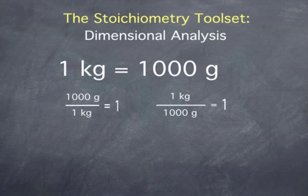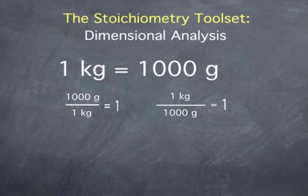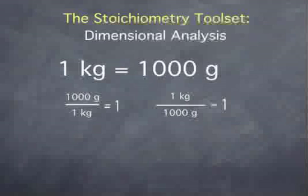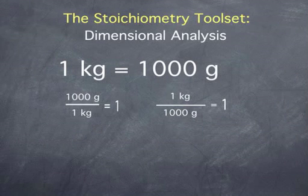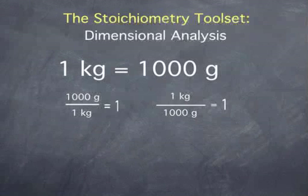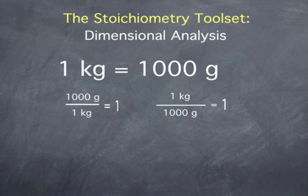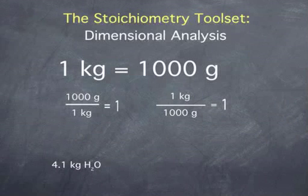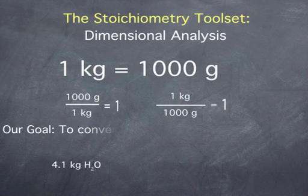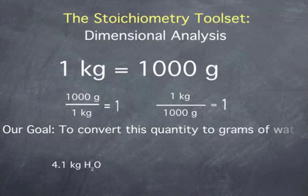These ratios are useful since they allow us to convert from quantities in grams to quantities in kilograms, and vice versa. Consider, for example, the quantity 4.1 kilograms of water, and say we want to convert this quantity to grams of water.